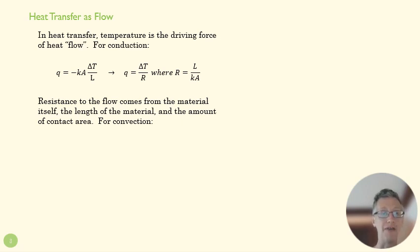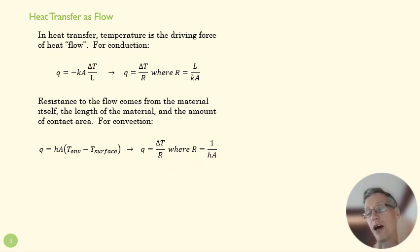For convection, we can do the same thing in terms of turning that into a flow equation. Our convection rate equation becomes q over delta T divided by r, driving force divided by resistance. But here our r is defined by our convective conditions, how much area of contact between our fluid and our surface and our convection coefficient.